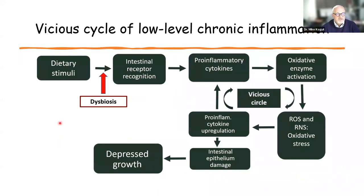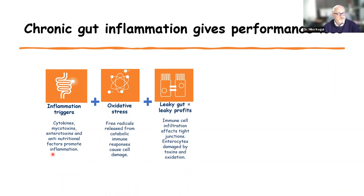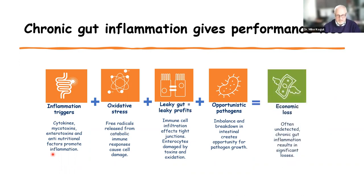To summarize that cycle: if you have a prolonged trigger, you are going to stimulate the inflammatory response, which increases oxidative stress, which has a negative effect on profits, which increases the ability of pathogens to colonize and grow in the animal, which ultimately leads to an economic loss.